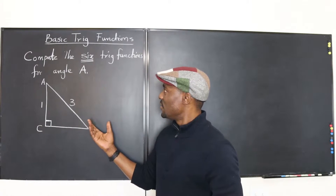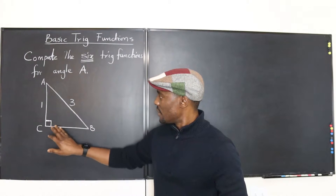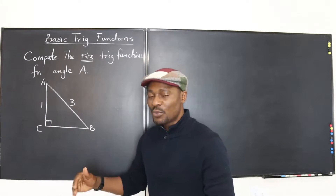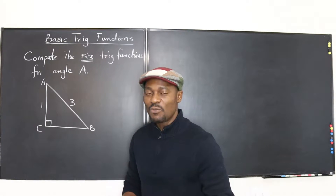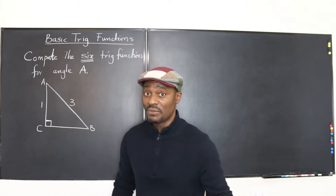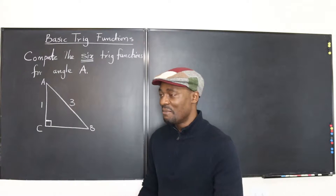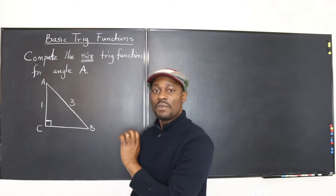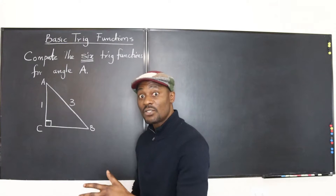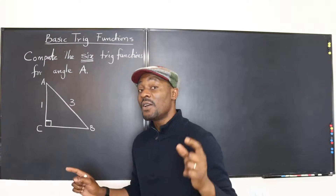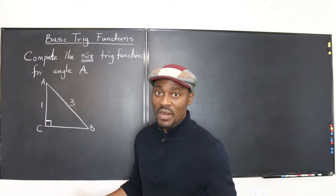The question is to compute the six trig functions for angle A. As you can see, this is a right triangle, and that's what we use to begin the whole idea of trig functions. You can apply these to other types of triangles, but the definition of trig functions is on the basis of a right triangle — any triangle that contains one 90-degree angle, with the other two angles adding up to 90 degrees so that everything totals 180 degrees.